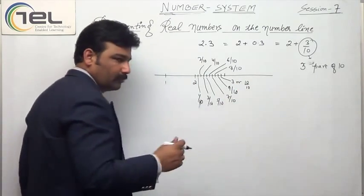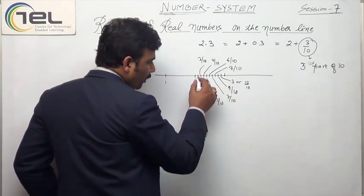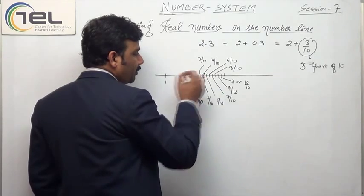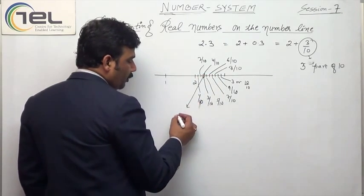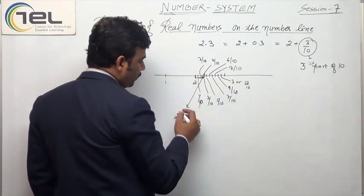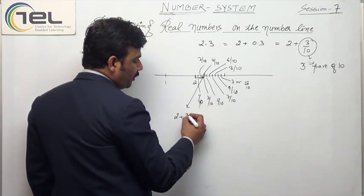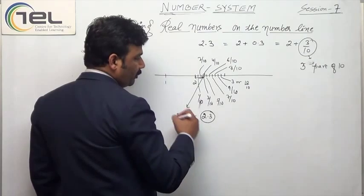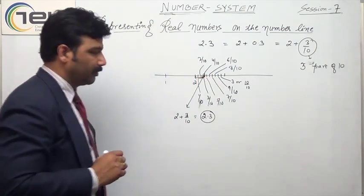That means total it comes to be: this is 2 plus 1 by 10th part. What I have to take is the 3rd part of this. So this point represents 2 — up to this. Then I add this segment: 3 by 10. So it becomes 2.3. The representation on the number line of 2.3 is this point.